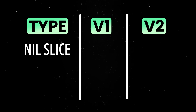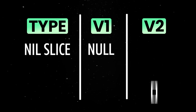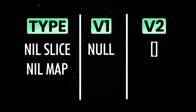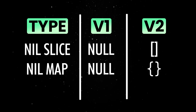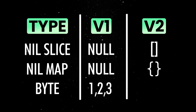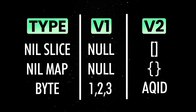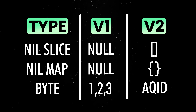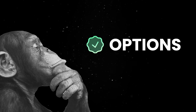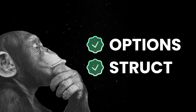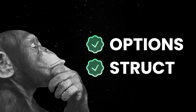The default behavior has changed too. In v1, a nil slice was encoded as null; in v2, it becomes an empty array. A nil map used to be null, now it's an empty object. Byte arrays used to serialize as arrays of numbers, now they're base64 strings. You can toggle this back to the old behavior using options or struct tags, but this means if your clients expect specific formats, you need to be careful or very explicit.